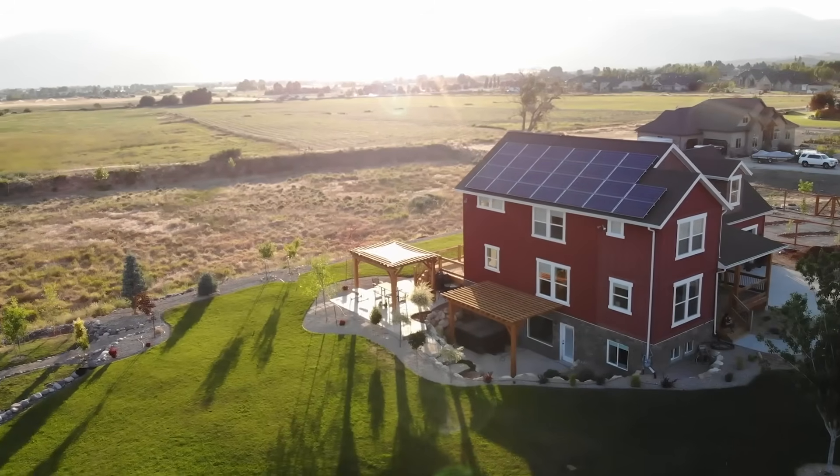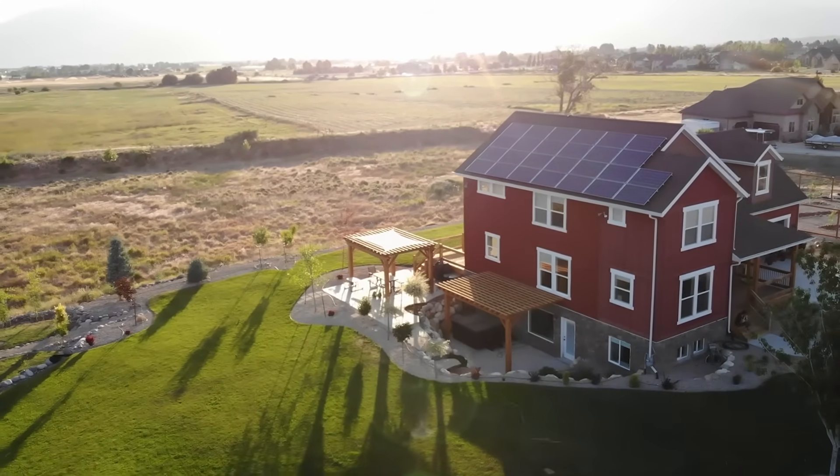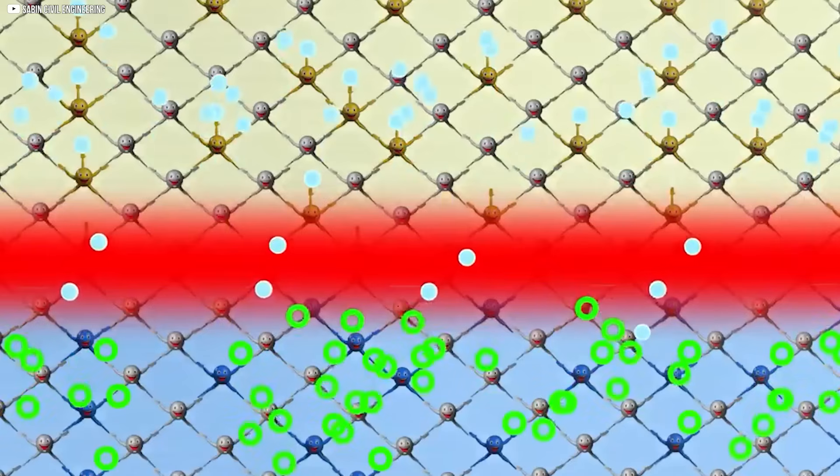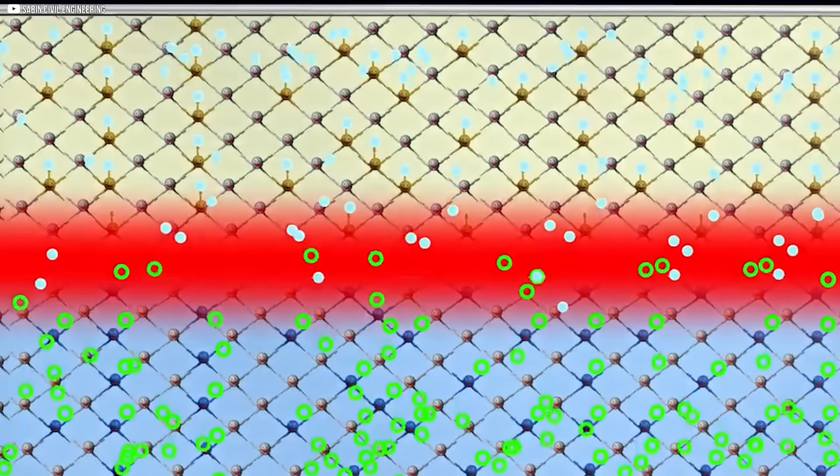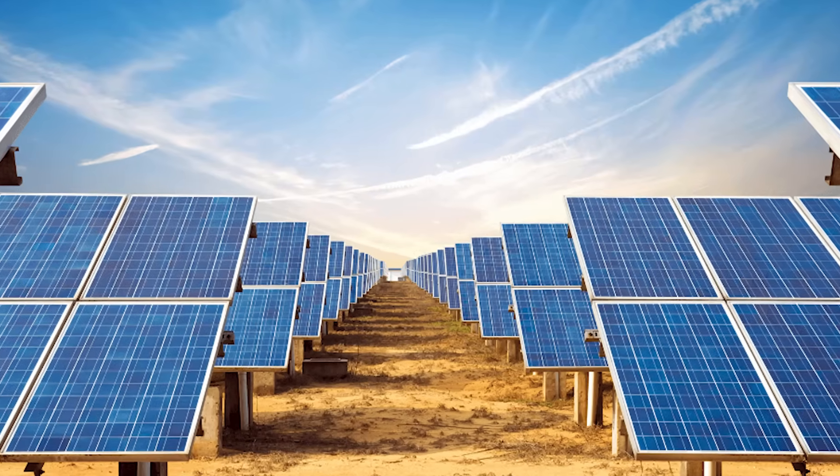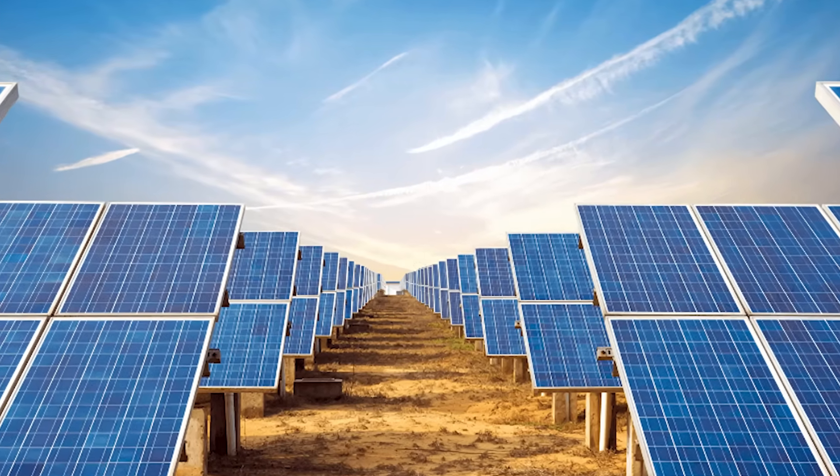This flow of electrons triggered by sunlight, controlled by the p-n junction, and carried by wires, is what powers everything from garden lights to entire cities. It's a continuous, silent process. As long as the sun shines, photons keep hitting the silicon, electrons keep moving, and the solar panel keeps producing electricity.